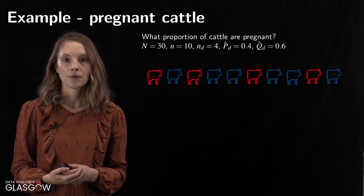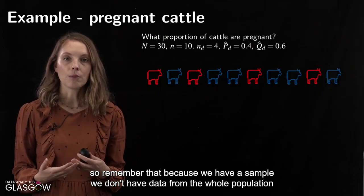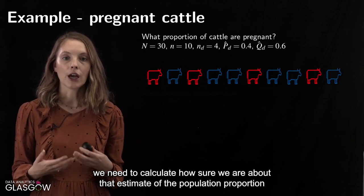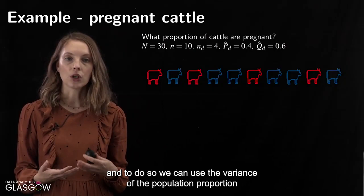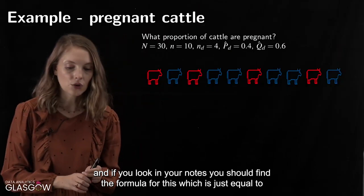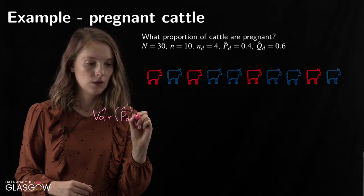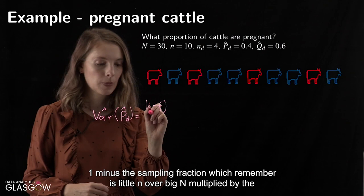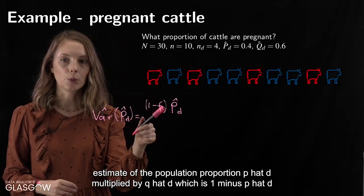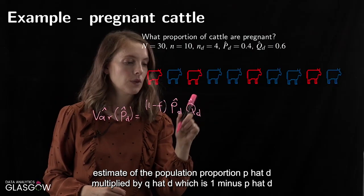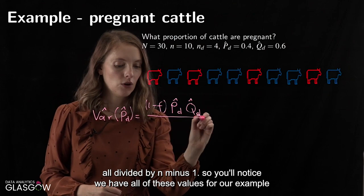We can also calculate the variance of that population proportion. Because we only have a sample and not the whole population, we need to quantify how certain we are about our estimate of the population proportion. The formula for the variance of P̂D is: 1 minus the sampling fraction (little n over big N), multiplied by P̂D, multiplied by Q̂D (which is 1 minus P̂D), all divided by n minus 1.